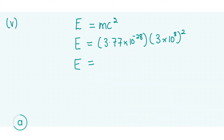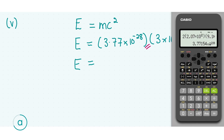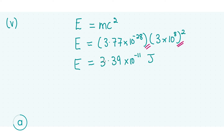With the formula and the correct values for mass and the speed of light, we can now calculate the minimum energy in joules. The more precise mass value stored in the calculator as 'answer' is used, with the speed of light squared — don't forget your brackets. This gives roughly 3.39 × 10⁻¹¹ joules. Don't forget your units — even though we still need to convert to electron volts, this answer earns your next three marks.